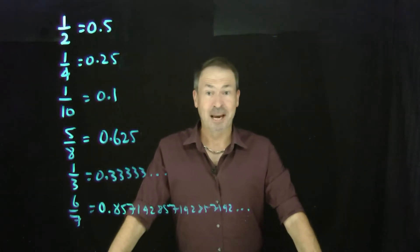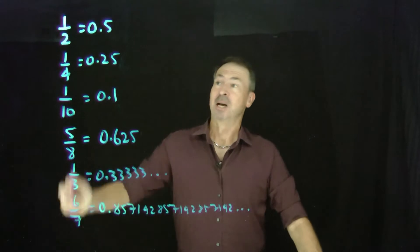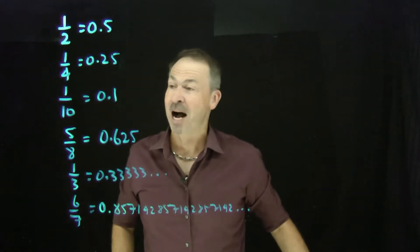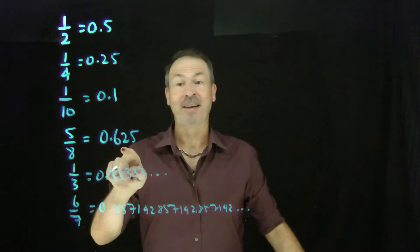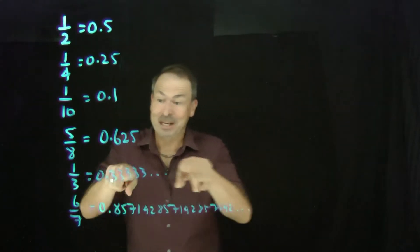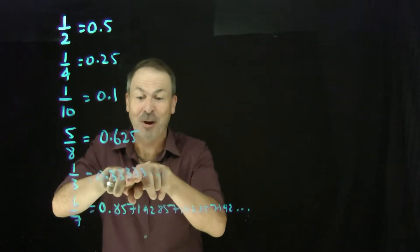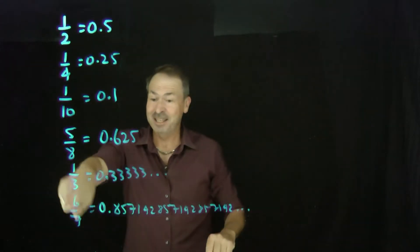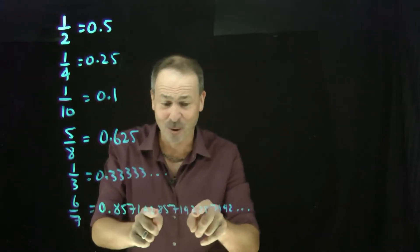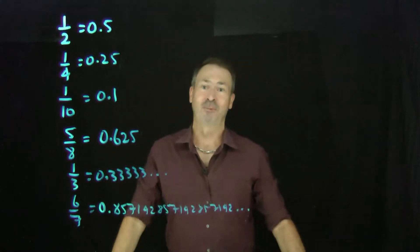Here are the decimal representations we have so far of some fractions. 1 half is 0.5, 1 quarter is 0.25, 1 tenth is 0.1, 5 eighths is this. 1 third is interesting — that has a decimal representation that goes on forever: 3, 3, 3, 3, forever. And 6 sevenths was strange as well — it had a repeating pattern that also went on forever, an infinite decimal representation.